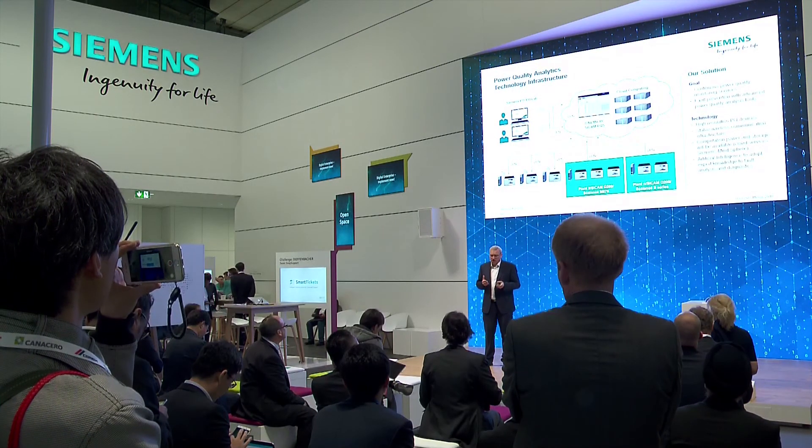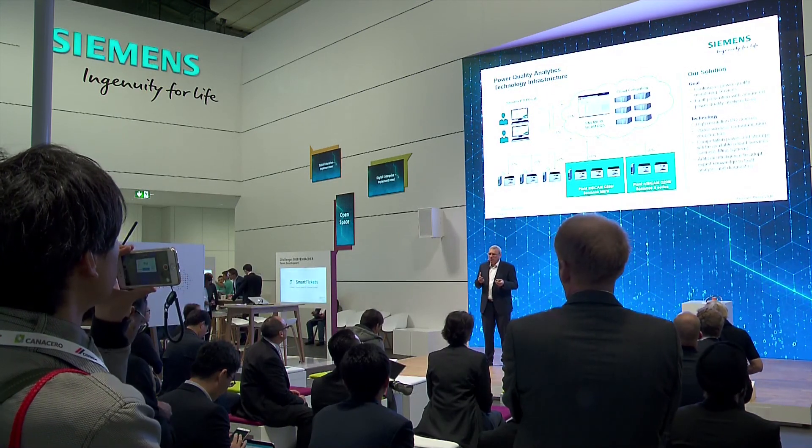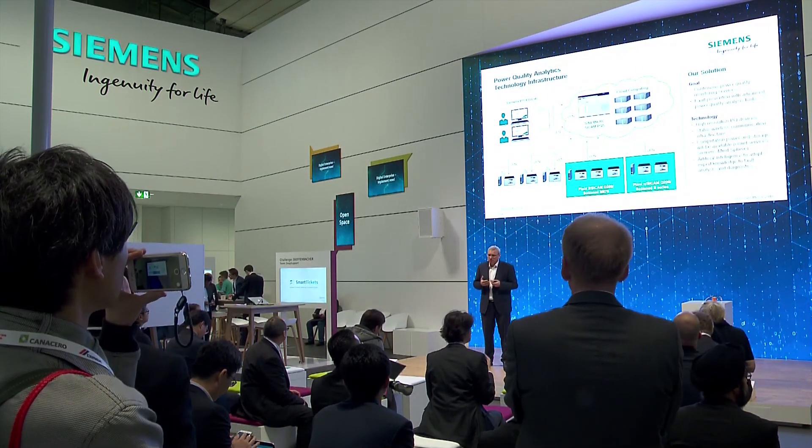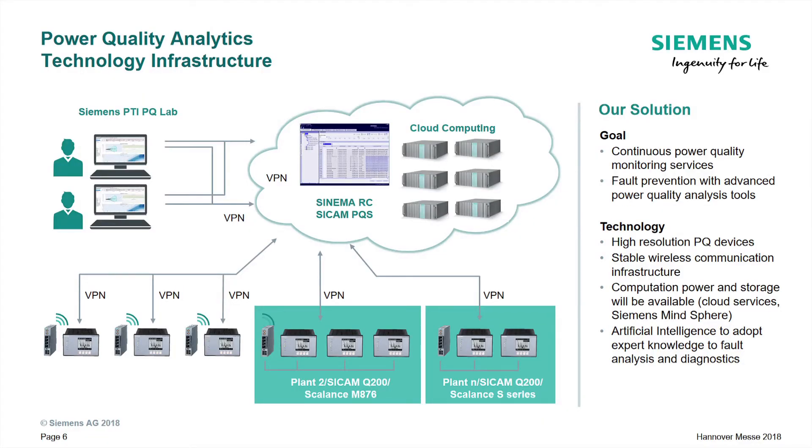The VPN communication is done with the SINEMA RC server — a communication software you can also see at the booths. The data are gathered by the SICAM PQS system. Based on the gathered data, we perform our power quality analytics. The next challenge is computation power, as we are dealing with a large amount of data. To reach this goal, we are using methods of artificial intelligence, which is the perfect way to handle this data and detect abnormal states.